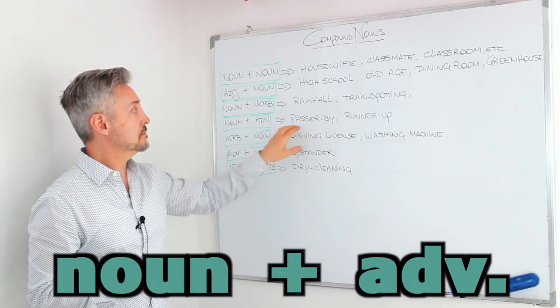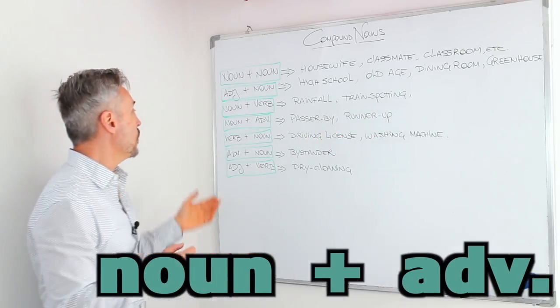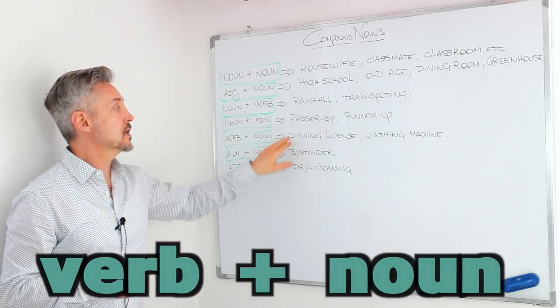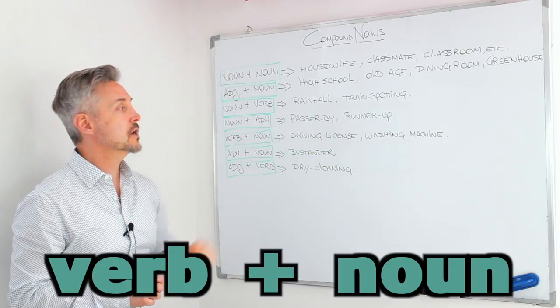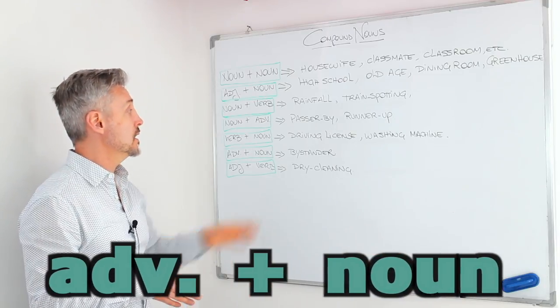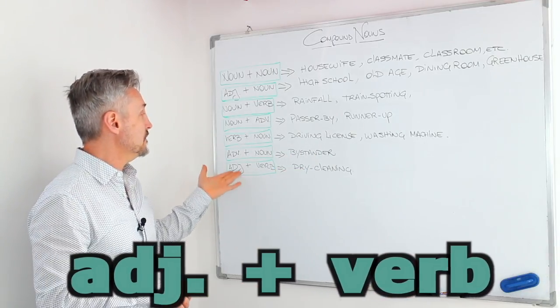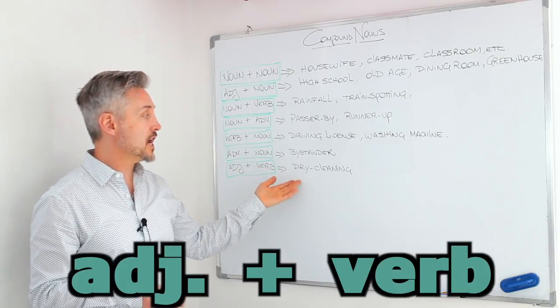Noun plus adverb. Passerby, runner-up. Or verb plus noun. Driving license, washing machine. Adverb plus noun. Bystander, for example. And adjective plus verb. Dry cleaning.